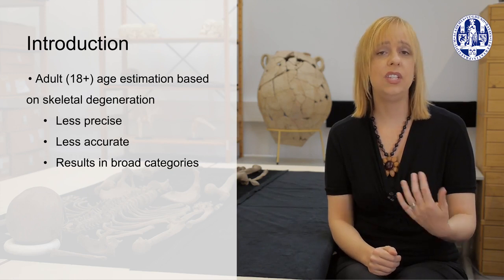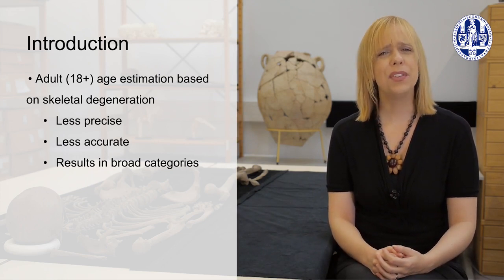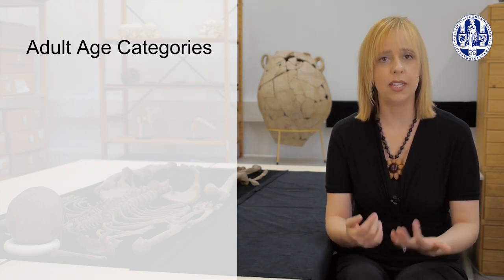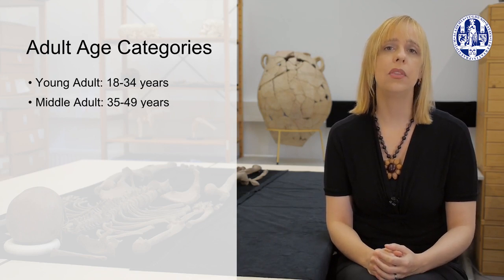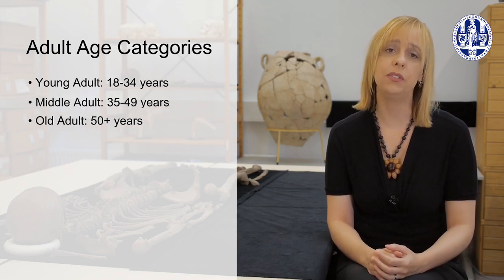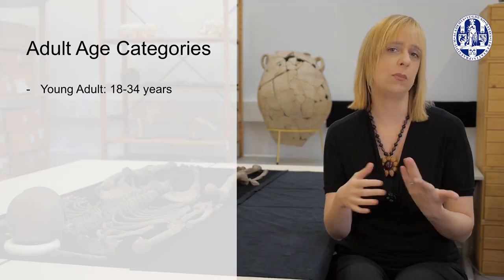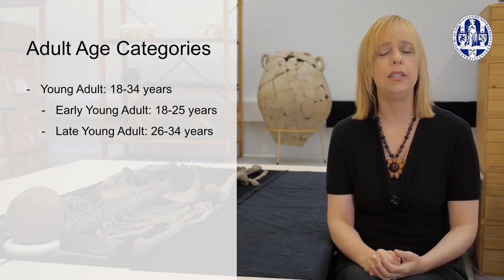After around 50 years of age, degeneration patterns become too unclear to put individuals into smaller age groups. It's for this reason that we have a limited number of age categories: young adult from 18 to 34 years, middle adult from 35 to 49, and old adult which is 50 plus. Because of a few late-fusing epiphyses — such as the medial clavicle, which doesn't fuse until around age 25 — we can often divide young adult into early young adult (18–25) and late young adult (26–34).